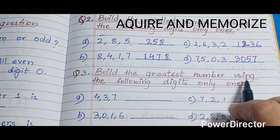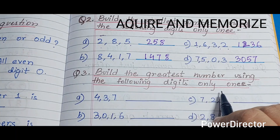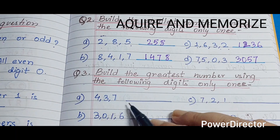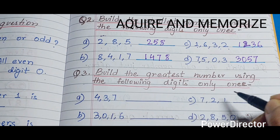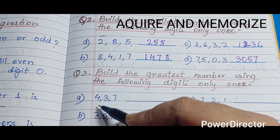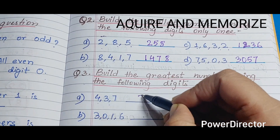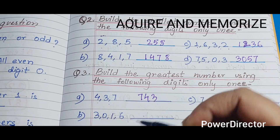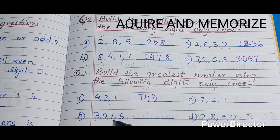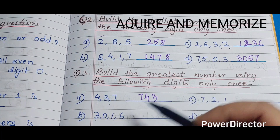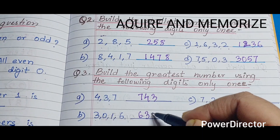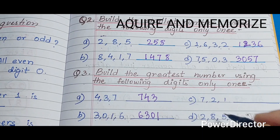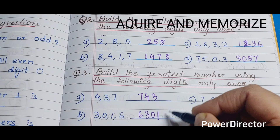Now build the greatest number using the following digits only once. We use the given digits to make the biggest number. With digits 4, 3, 7 the greatest number is 743. With digits 3, 0, 1, 6 the greatest number is 6310.